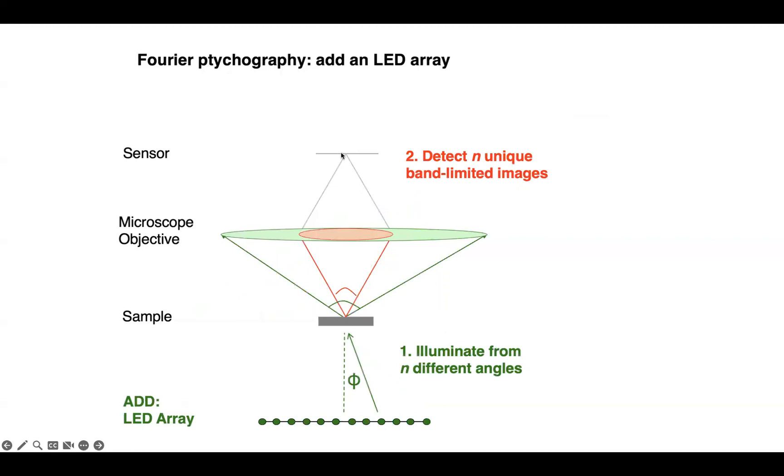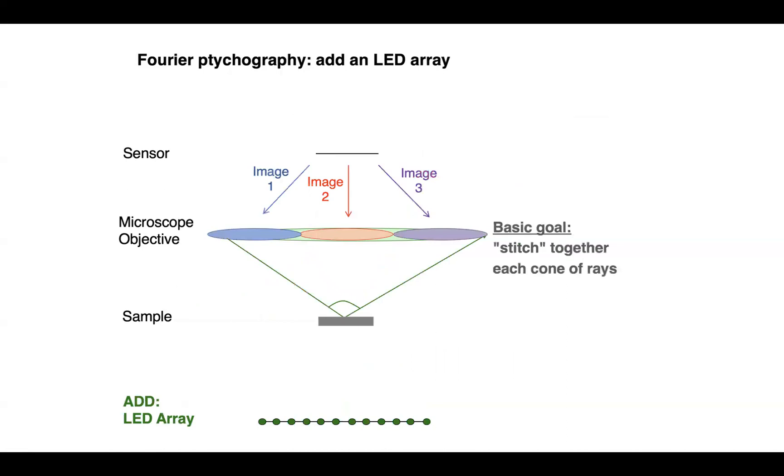So in Fourier ptychography, we don't actually shift the source usually. We instead use an array of light sources. The first implementation used an LED array. What we did is we turned on one LED at a time. If there's n LEDs in our image, then we captured n different images, one for each of the LEDs illuminating the sample.